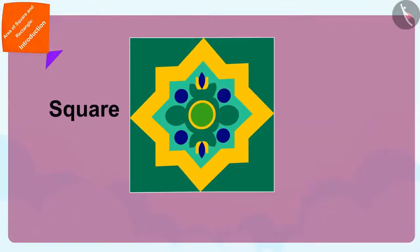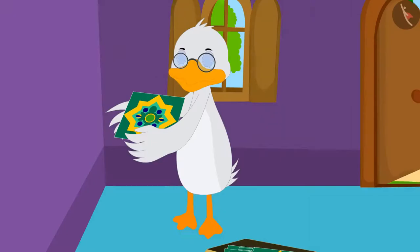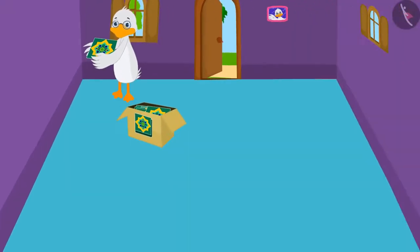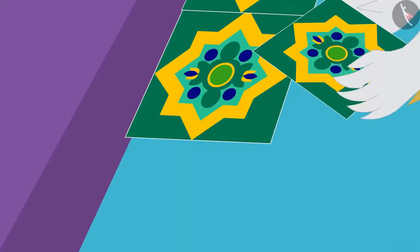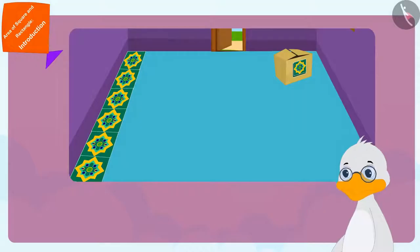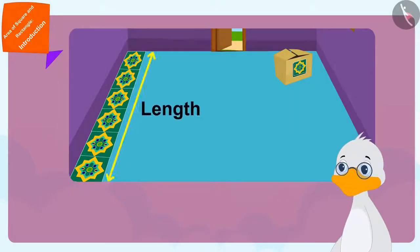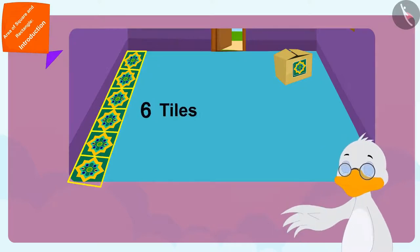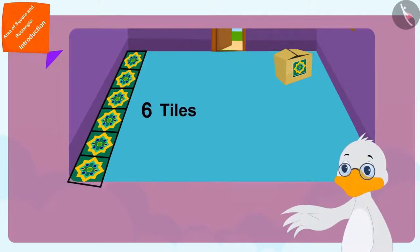Each tile is square in shape and its edges are one meter long. Uncle first started laying tiles along the length of the floor of his room. Then, Uncle saw that there were a total of six tiles in the length of his floor.